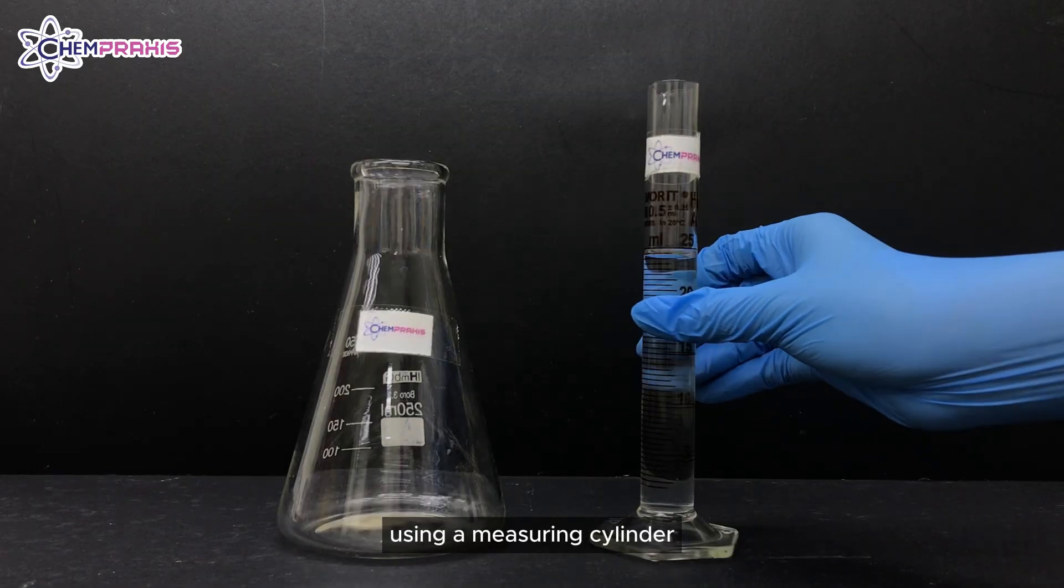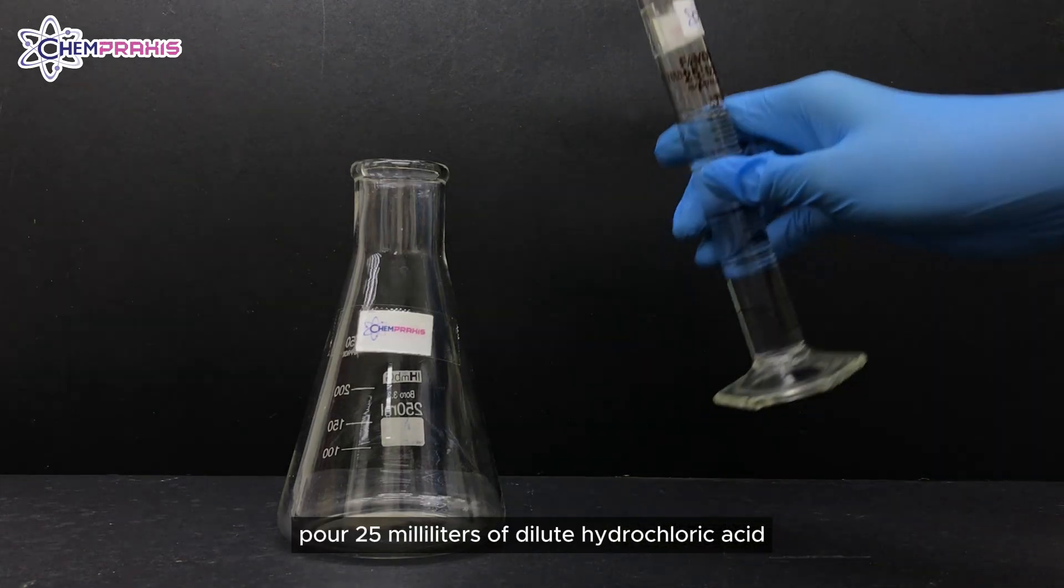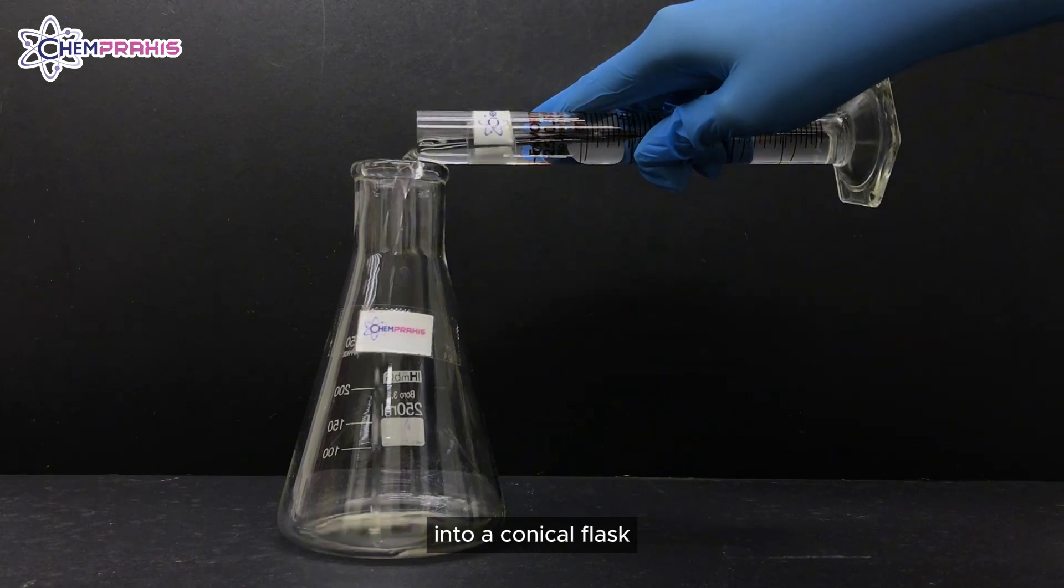Using a measuring cylinder, pour 25 ml of dilute hydrochloric acid into a conical flask.